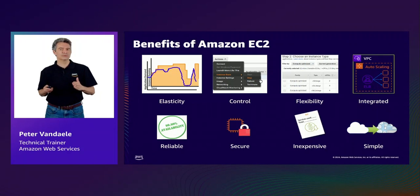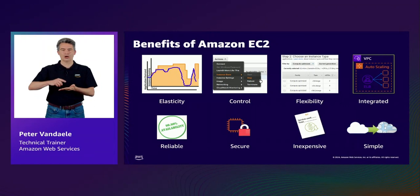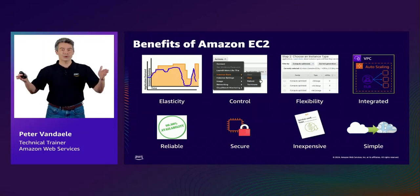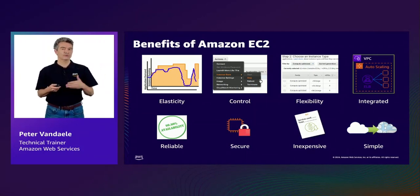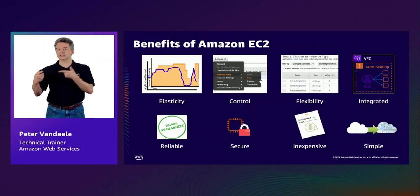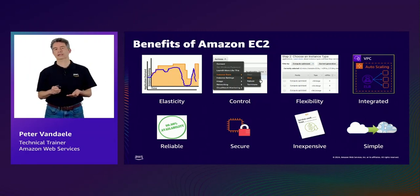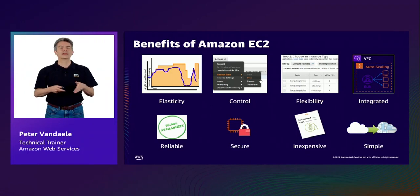With EC2, there are various different features built in that give us the ability to scale up or down, also referred to as vertical scaling, or in or out, which is called horizontal scaling. For vertical scaling, we can change the underlying instance type, for example, move to a larger or smaller instance type.